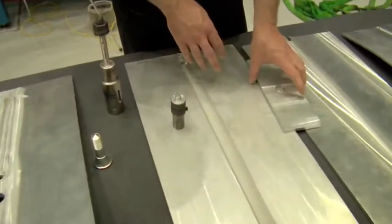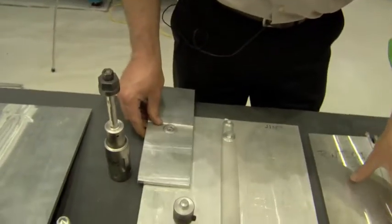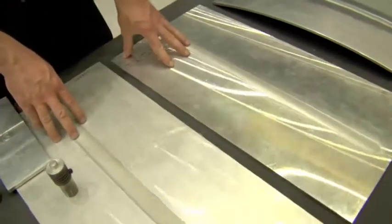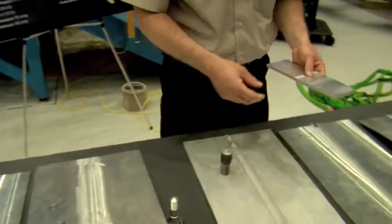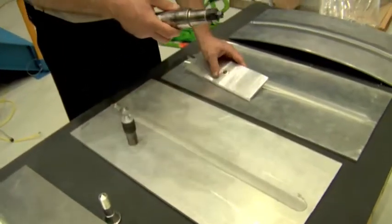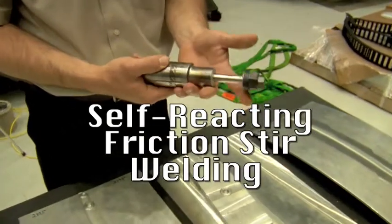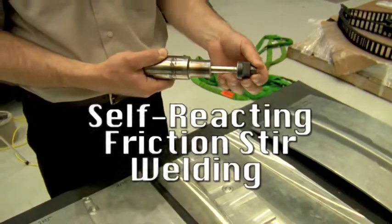For welding two very large pieces together, Robert uses a slightly different process. There's another version of friction stir welding that we developed here at Marshall called self-reacting friction stir welding, which is done with a tool that looks like this.